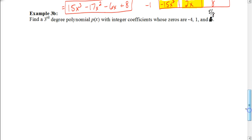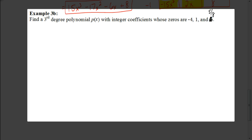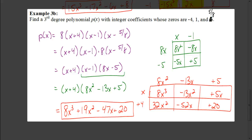So the standard form answer is 15x cubed minus 17x squared minus 6x plus 8. Now try the next one on your own — pause the video and hit play when ready to check. You should have gotten 8x cubed plus 19x squared minus 47x plus 20. To get there, multiply the fraction by 8 to get (8x minus 5), then multiply (x minus 1) and (8x minus 5) to get 8x squared minus 13x plus 5, and finally multiply by the remaining factor. That's how we use the factor theorem to build equations from zeros.